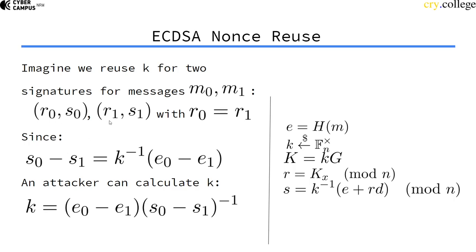So, if we're an attacker and we observe those two signatures, we can actually just divide. We can divide E0 minus E1 by S0 minus S1. Now, dividing, of course, means taking the multiplicative inverse in the underlying field.